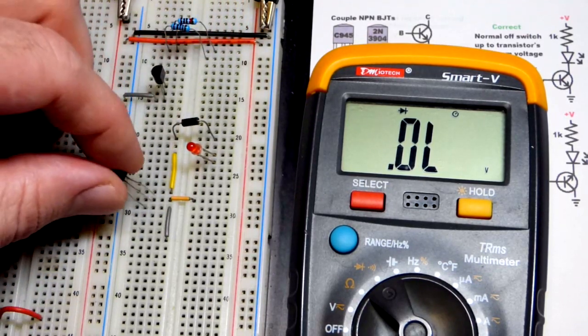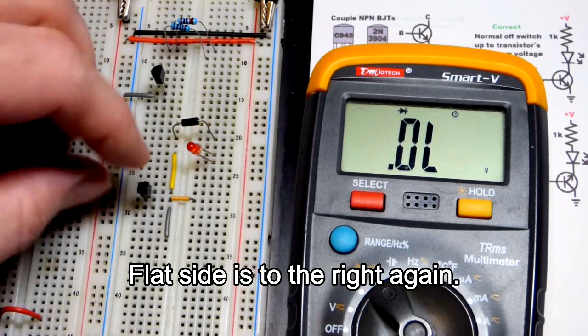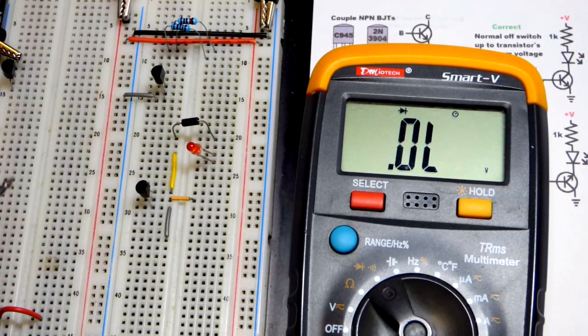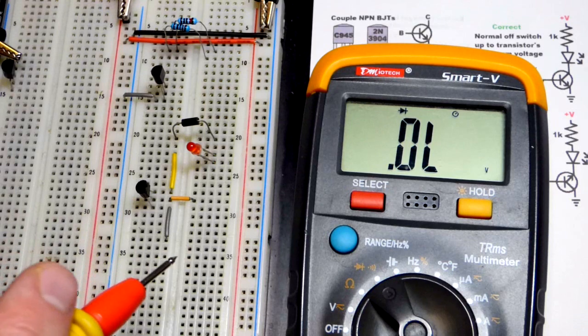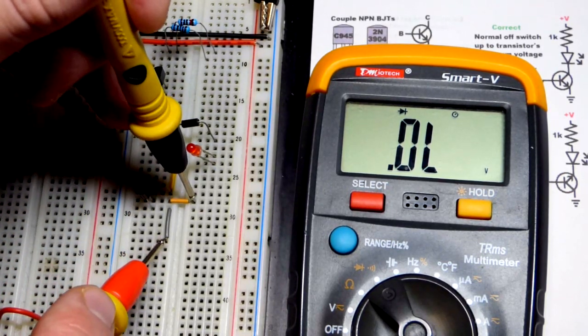Now, we're going to grab the C945 right there. And, I believe the emitter is at the bottom there. Or, the base, I mean. And, nope, looks like I am wrong on that.